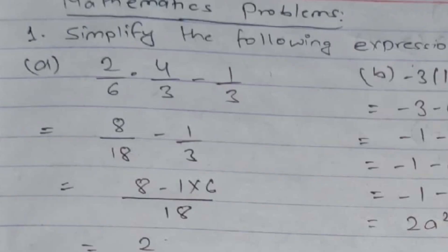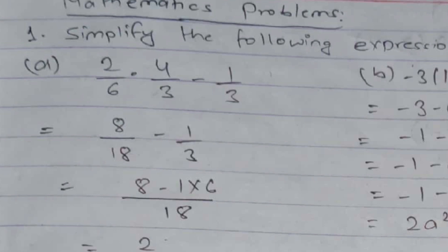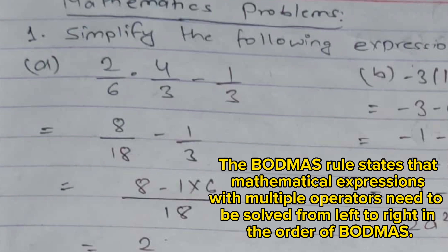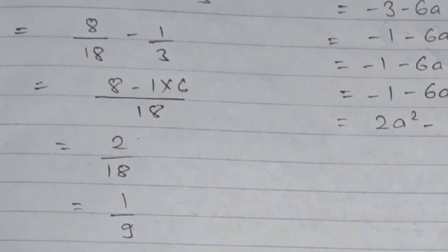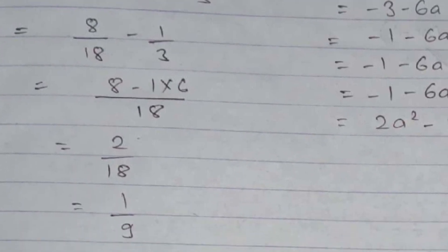The first question is from simplification. Part A: 2/6 × 4/3 − 1/3. We apply the BODMAS rule — Bracket, Of, Division, Multiplication, Addition, Subtraction. Multiplication appears first, so we multiply: 2/6 × 4/3 = 8/18. We subtract 1/3, taking LCM of 18: 8 − (1×6) = 8 − 6 = 2. Therefore 2/18 = 1/9.